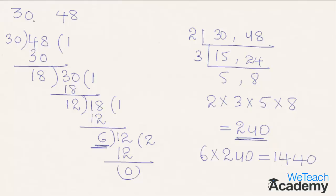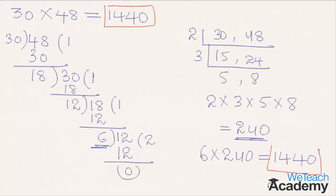Now let us find the product of the original numbers: 30 × 48 = 1440. Observing both values, they are equal — confirming that the product of their LCM and GCD equals the product of the given numbers.